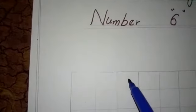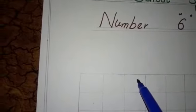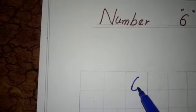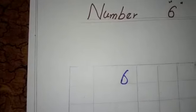So, I write here number 6. Make a standing line. Standing line and now make a half circle. So, this is 6.